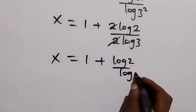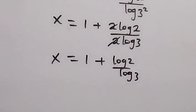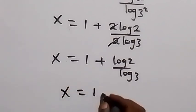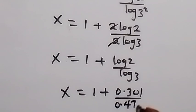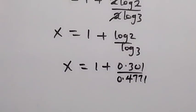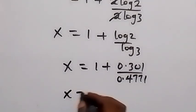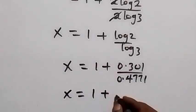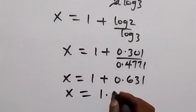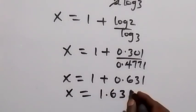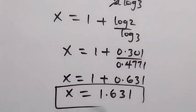The value of log 2, we can replace this as x equals to 1 plus log 2 is 0.301 divided by log 3 is 0.4771. When we divide this, we have x equals to 1 plus 0.631, which will give us x equals to 1.631. From here we have the solution to the problem.